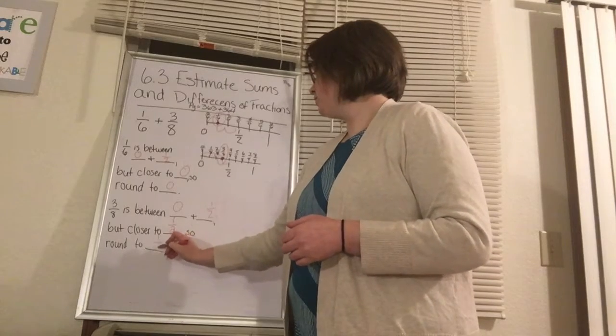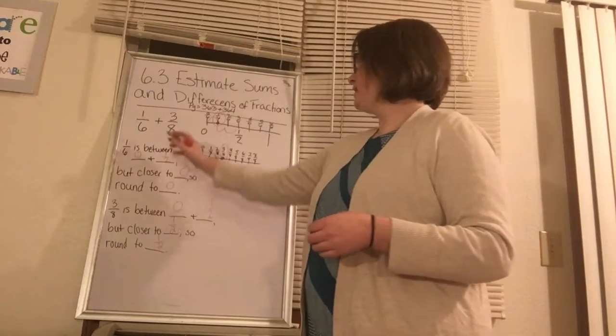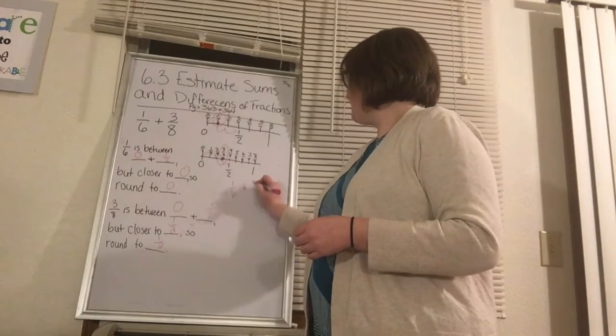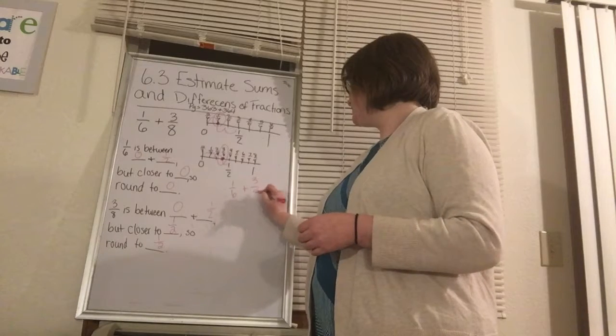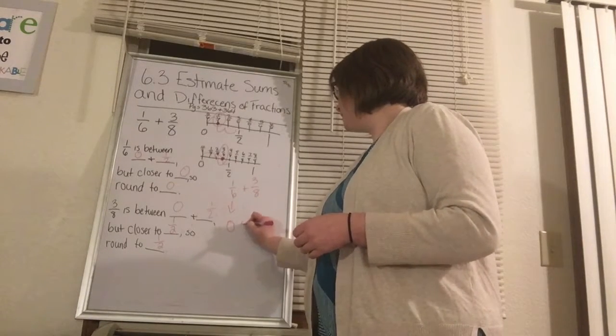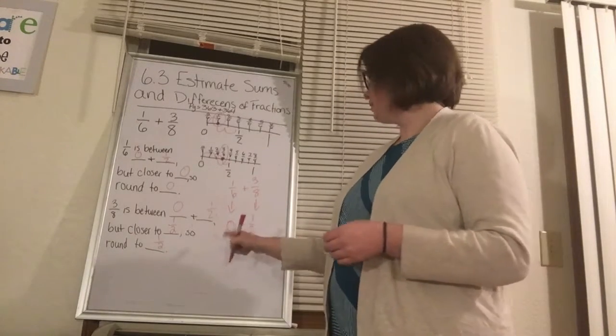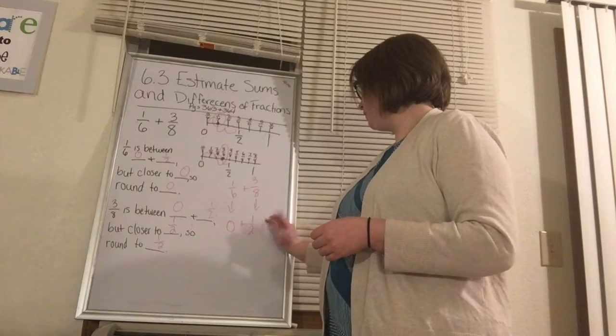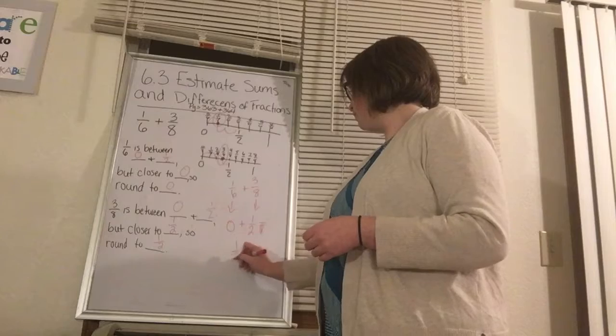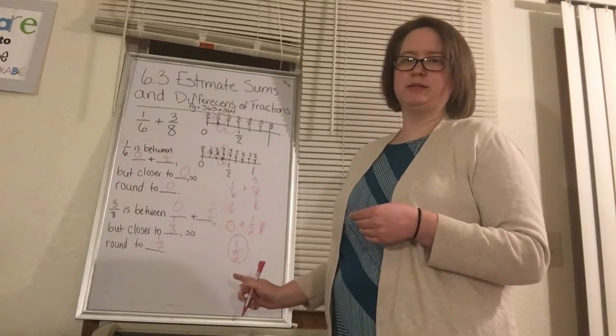So we're going to round to 1/2. So now we're going to take this. We have 1/6 plus 3/8. The 1/6 is going to become 0, and the 3/8 is going to become 1/2. So what is 0 plus 1/2? That equals 1/2. So our estimation to this problem is 1/2.